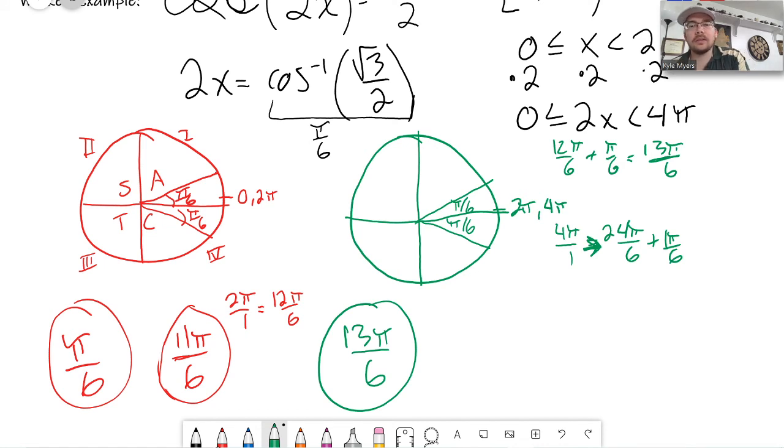Minus π over 6. That would be 23π over 6. 23π over 6. So, that's my other one. 23π over 6.